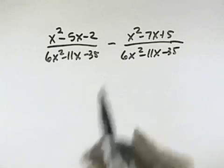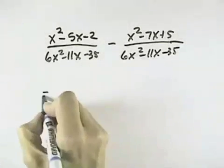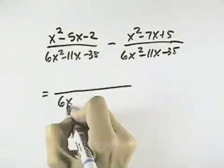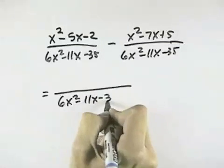We want to perform the indicated operation of subtraction. Since we already have a common denominator, that means we can subtract our numerators over this common denominator.